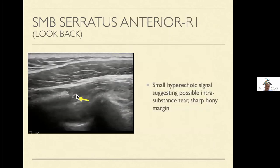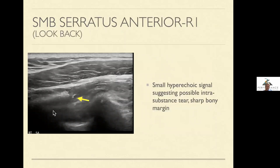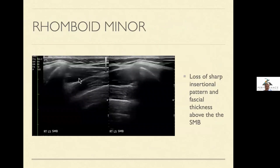Looking at the serratus anterior, there's another hyperechoic signal that's abnormal, and the margin here is rough and irregular — it should be a smooth margin. You should see the second rib, trap, the fascia layer over the top, and all of this is serratus anterior coming in. This is suggesting that she has injured this area from repetitive tennis.